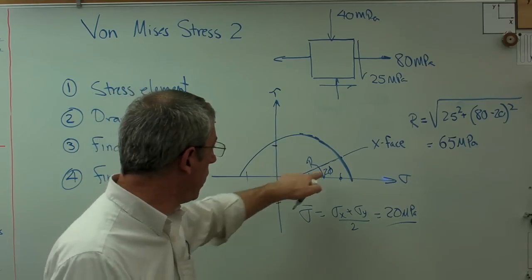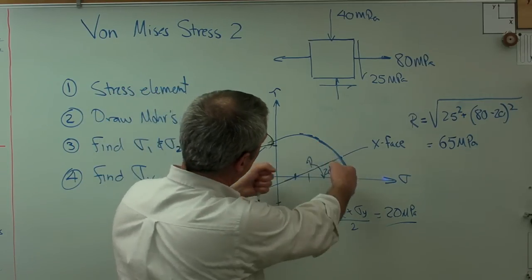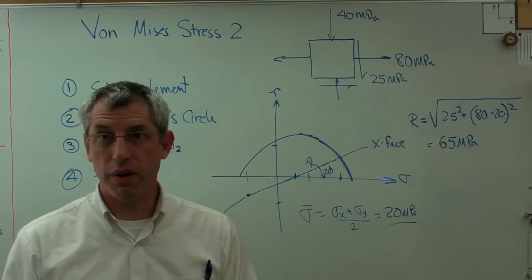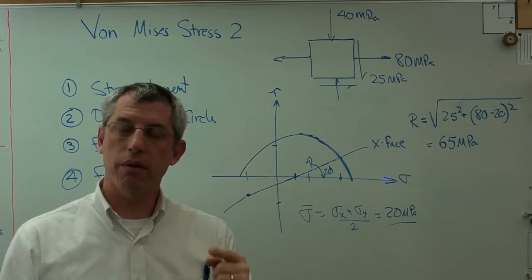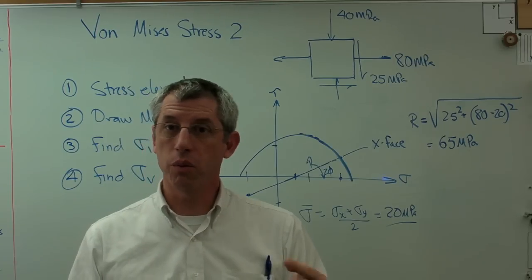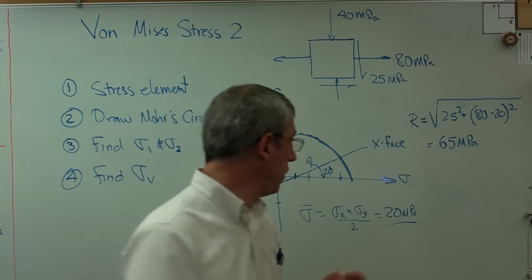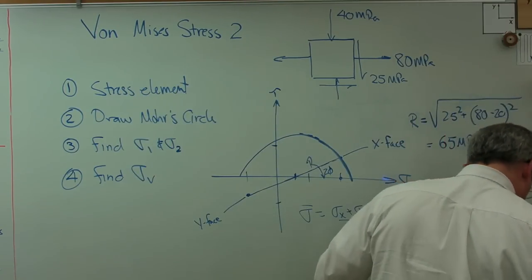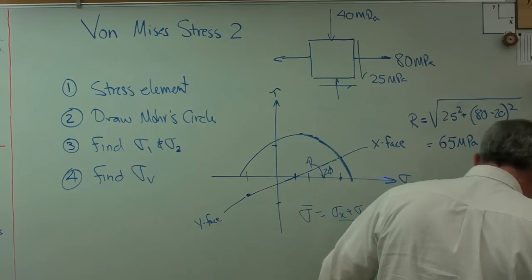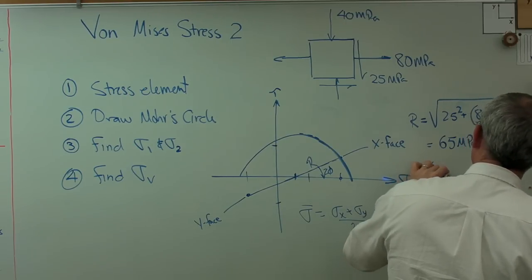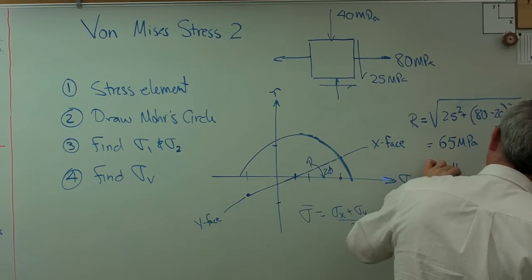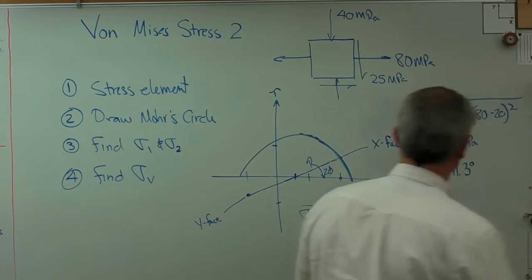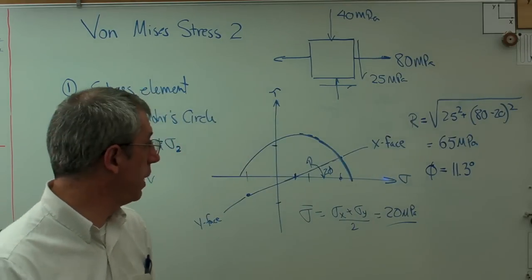Right now, the angle is really important here. Angle, in fact, if I took my element and I rotated it that way by phi, the faces of that stress element would see sigma 1 and sigma 2. So, 2 phi is, let's see, actually phi is 11.3 degrees. Make sure I get that right. It's 11.3 degrees. All right.